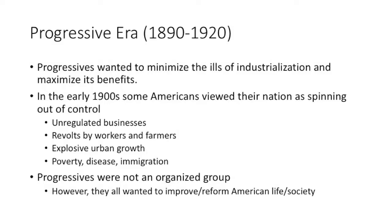Problems included unregulated businesses with monopolies, poor working conditions, no minimum wage or overtime, workers unionizing and revolting, farmers upset with the Populists, and rapid urban growth with no building codes — buildings built quickly without running water or toilets. The progressives wanted to fix all of this and improve society.